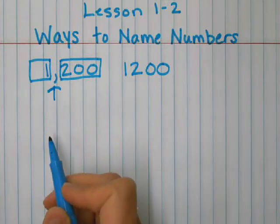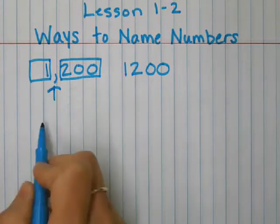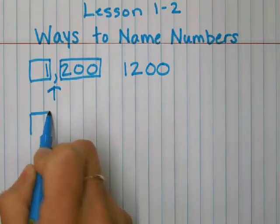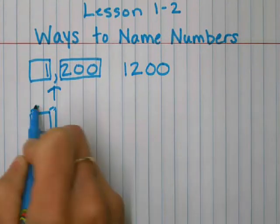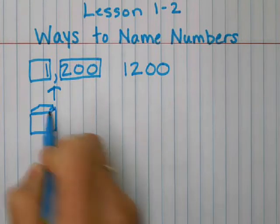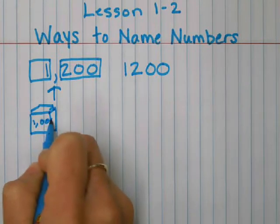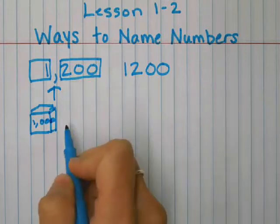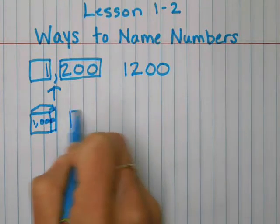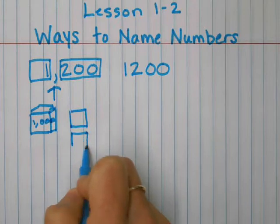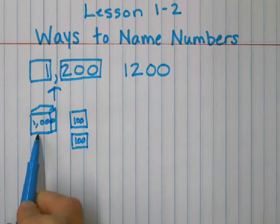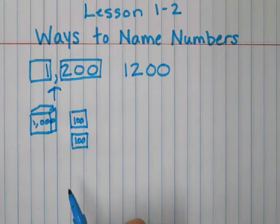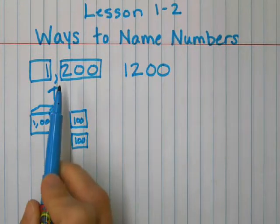So let me show you what this looks like with place value blocks. So if this is 1,200, I would start with a thousands block. That would be one thousand's block. And then I would have 200 flats. These are going to represent hundreds. So I have one thousand block and two hundreds blocks, which equals 1,200.